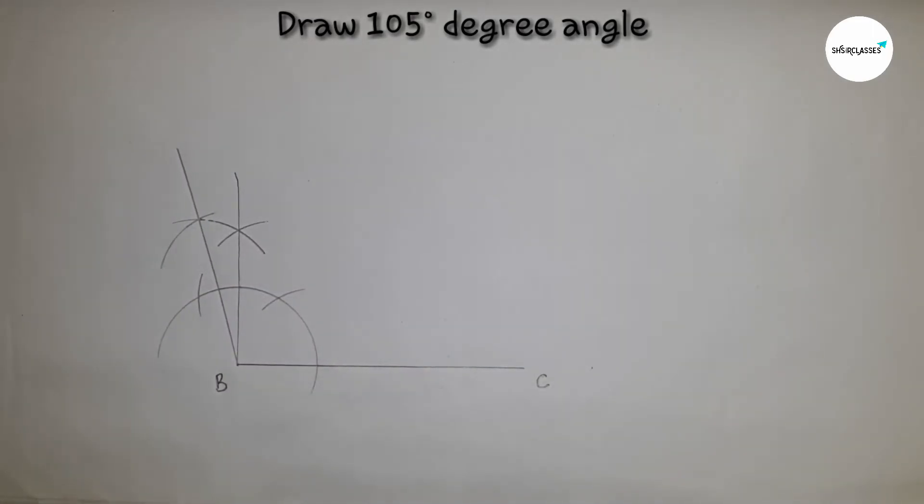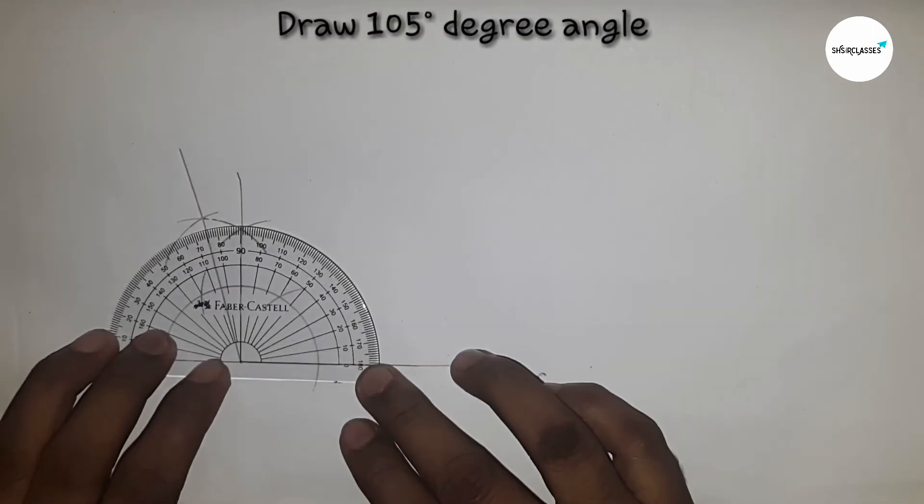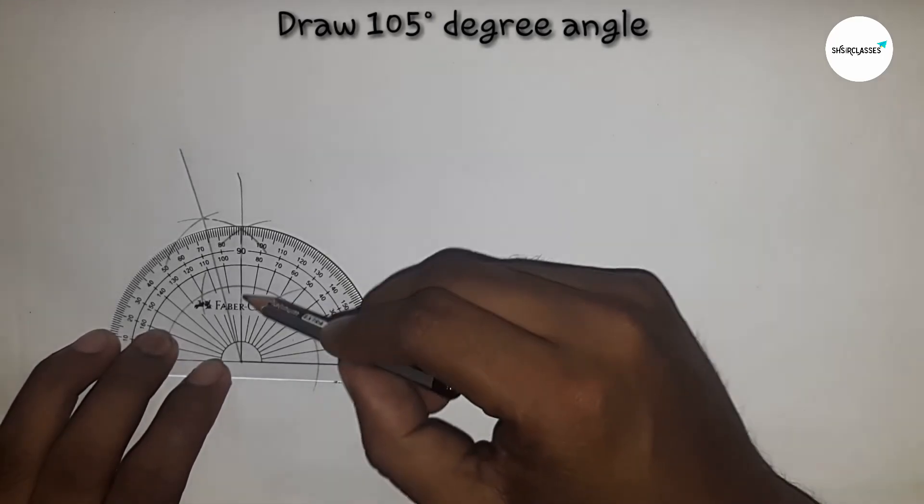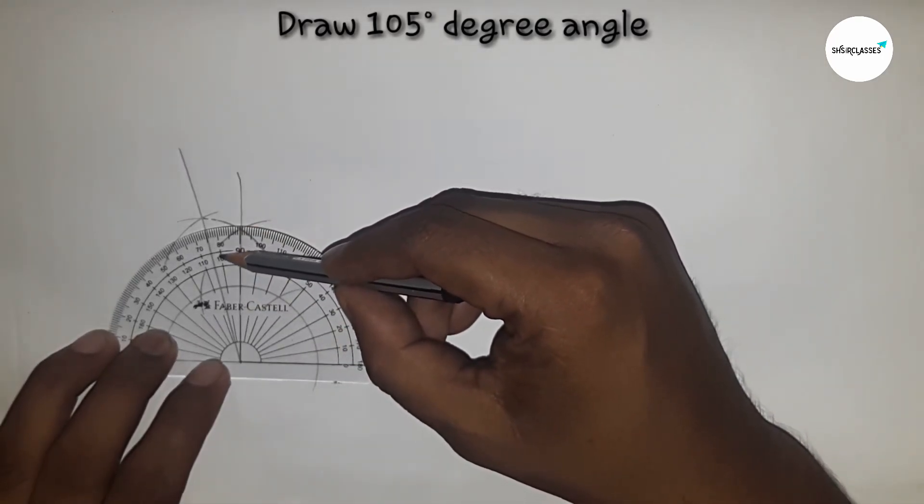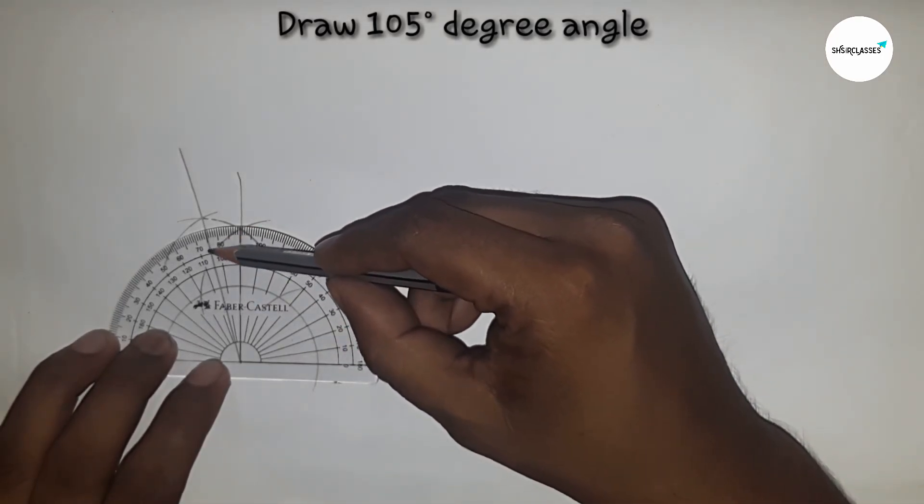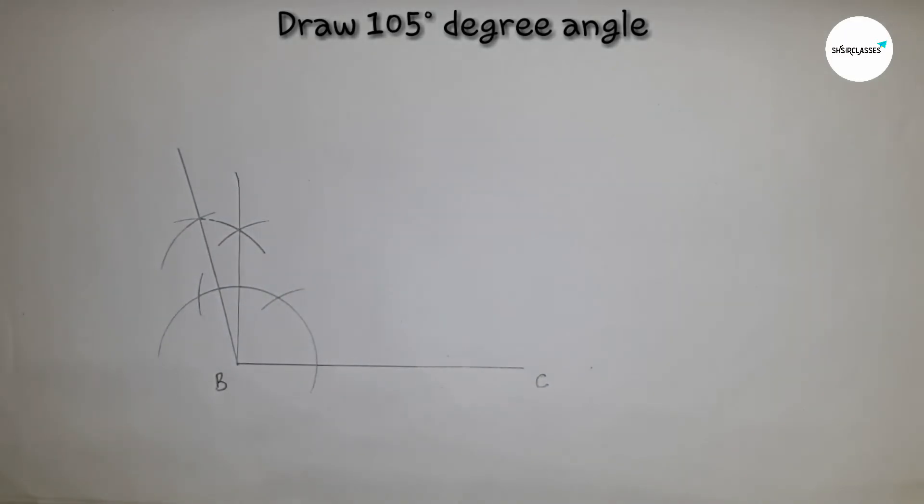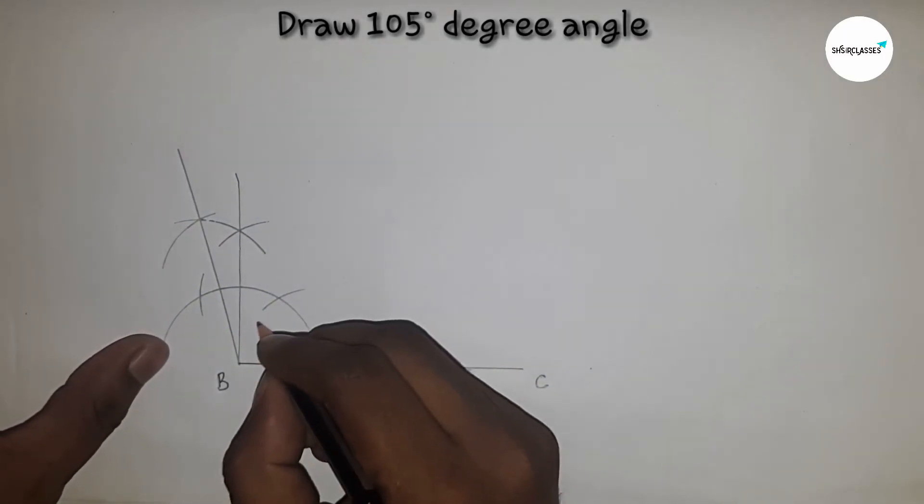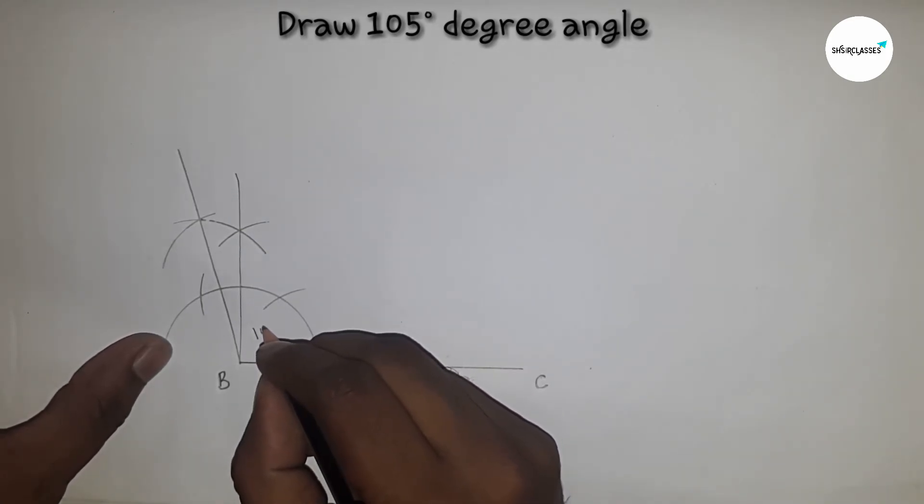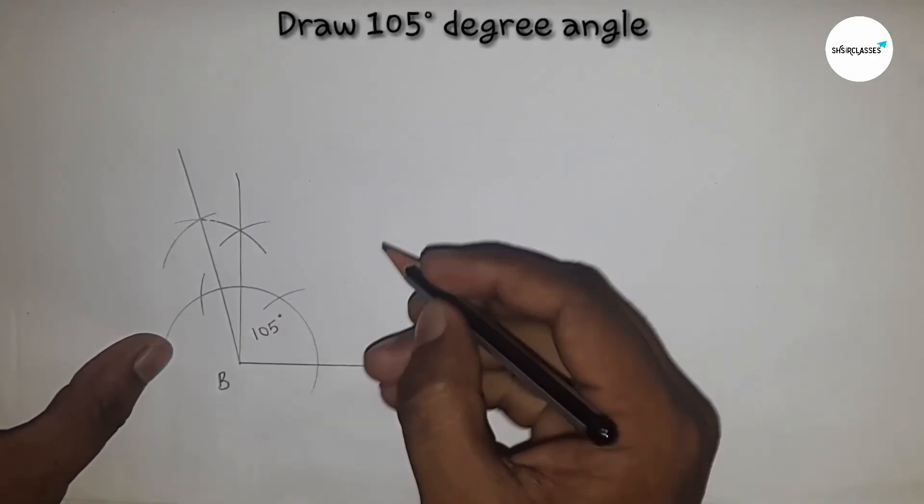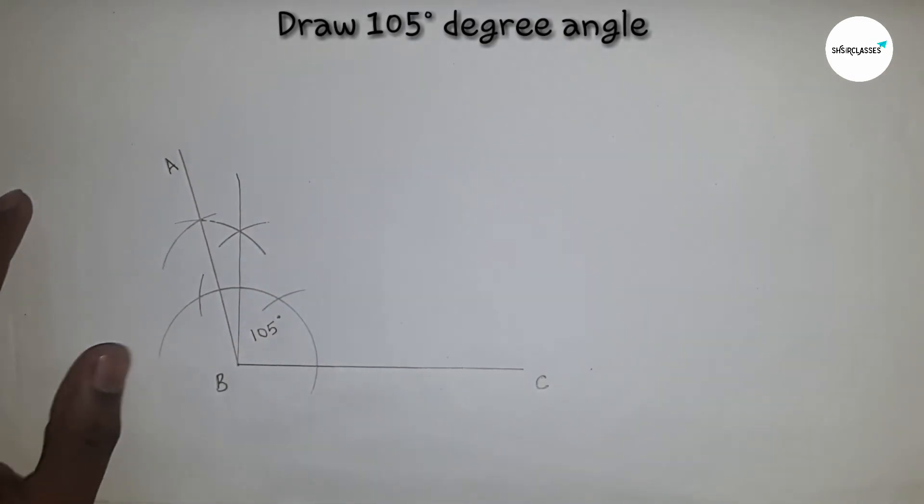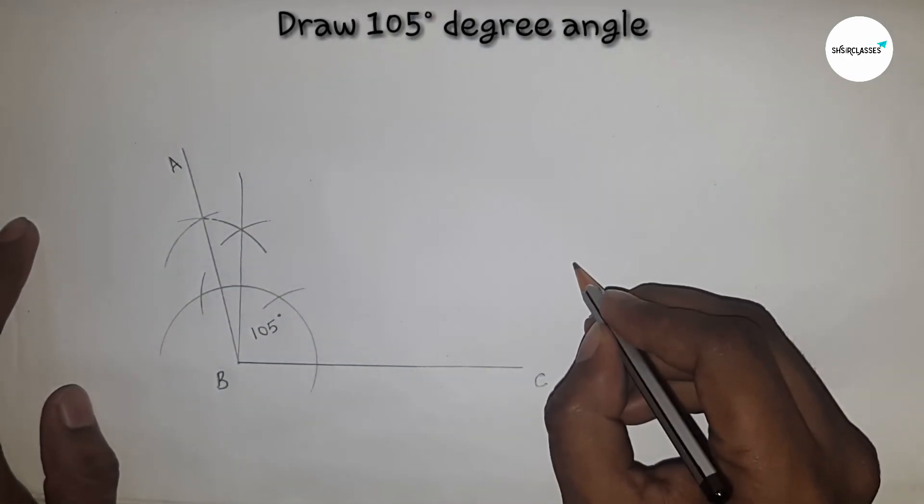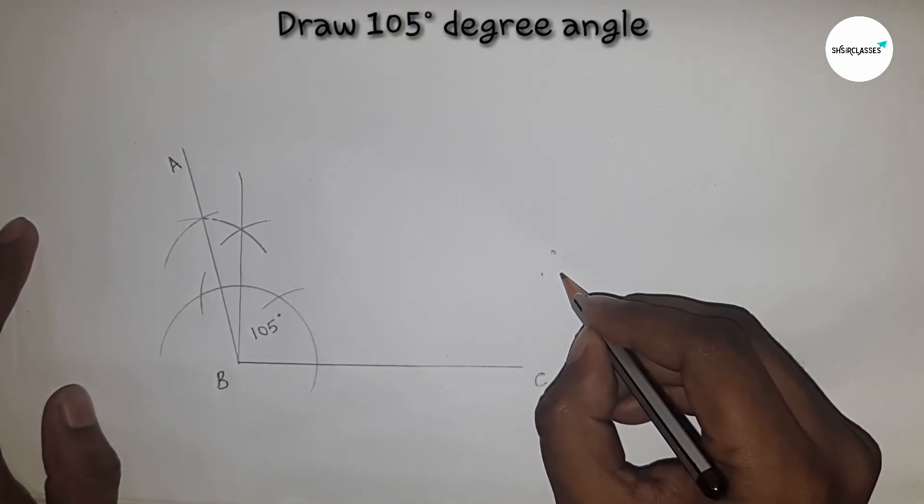I am going to check whether it is right or wrong. This is 100 and 5, so 105 degrees. So this is a 105 degree angle and written A here.